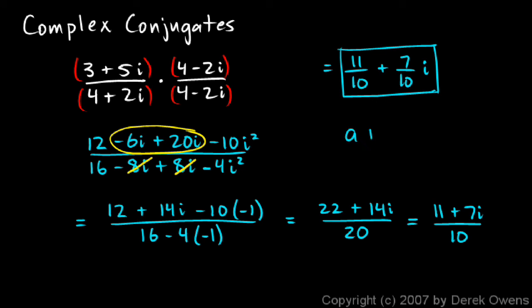This is a plus bi form. A in this case is 11 tenths, B is 7 tenths. So the point here, complex conjugates allow us to do a division problem and allow us to get all the imaginary parts out of the denominator so that we can express our final answer in standard form.